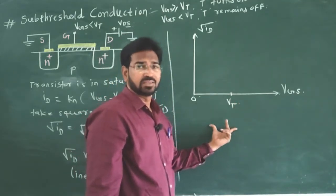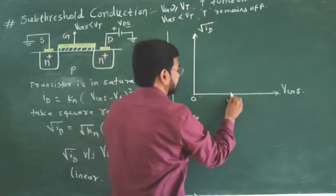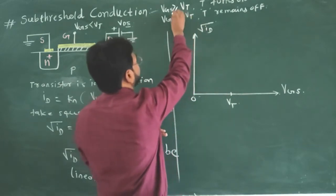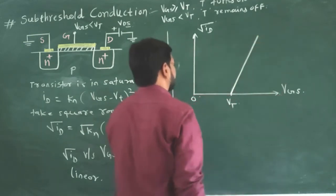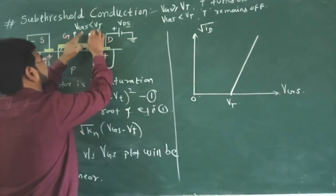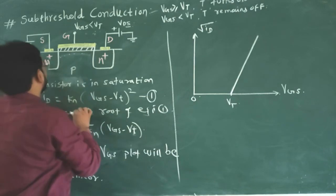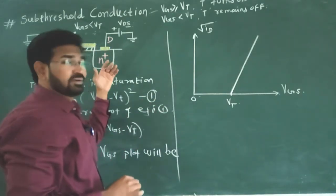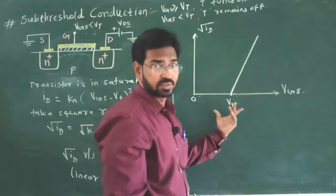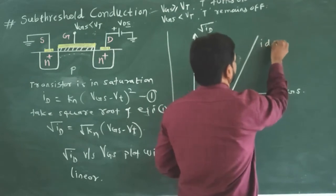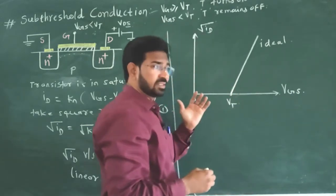It can be anything, 1 volt, 2 volt, 3 volt depends upon the N channel E MOSFET transistor model. As per this equation the drain current is 0. When Vgs is equal to Vt at that time the drain current increases. The channel is induced. When Vgs is greater than Vt, channel is induced and this is the ideal relation between square root of Id and Vgs.